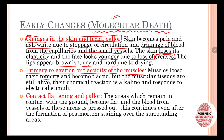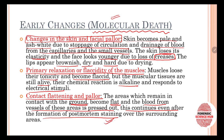Primary relaxation or flaccidity of muscles occurs next — the muscles lose their tonicity and become flaccid, but the muscular tissues are still alive because they have some ATP energy left. Their chemical reaction is alkaline and they respond to electrical stimuli. Then comes contact flattening: the areas in contact with the ground become flat as gravity pulls them down and blood is pressed out from the vessels in those areas. This continues even after the formation of post-mortem staining over surrounding areas.